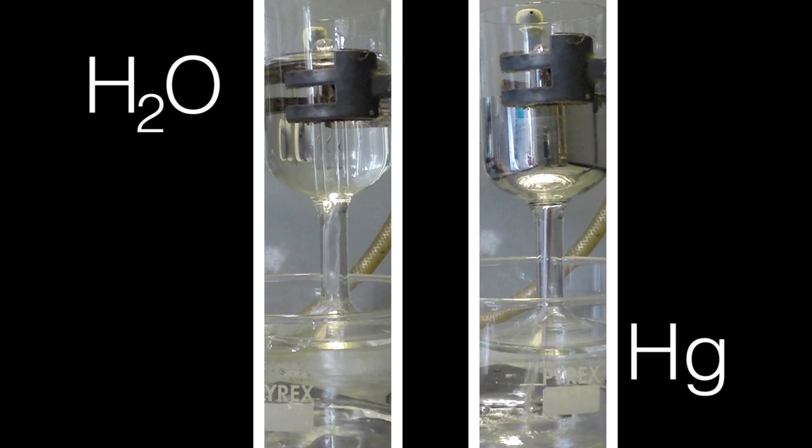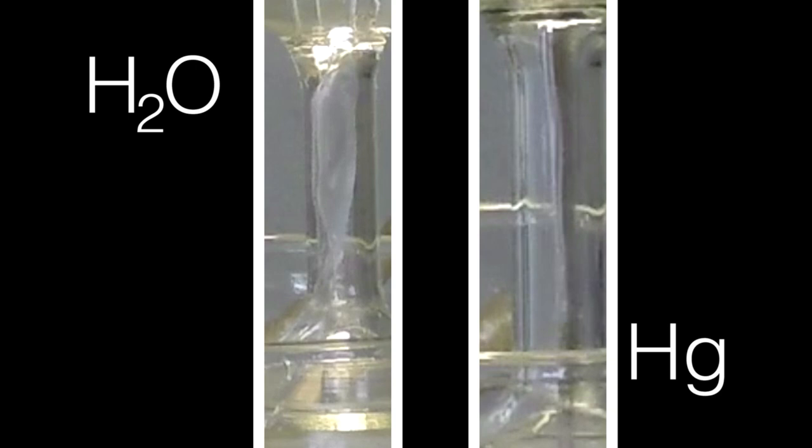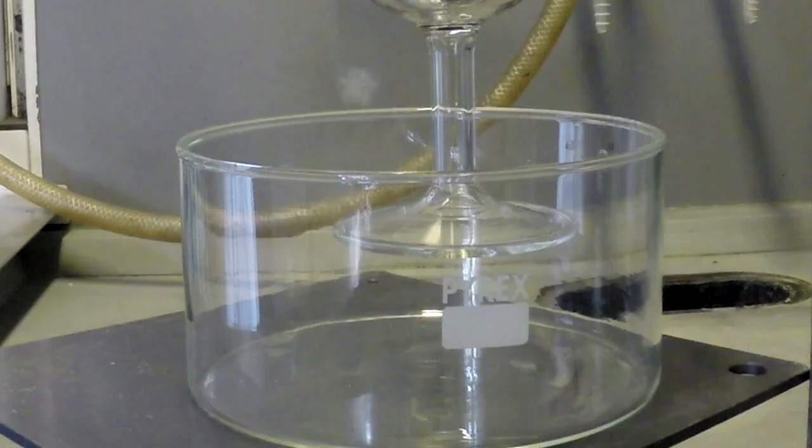but with mercury, because it is denser, and it doesn't wet glass, it goes straight down, and makes quite a spectacular pattern in the bottom of the dish.